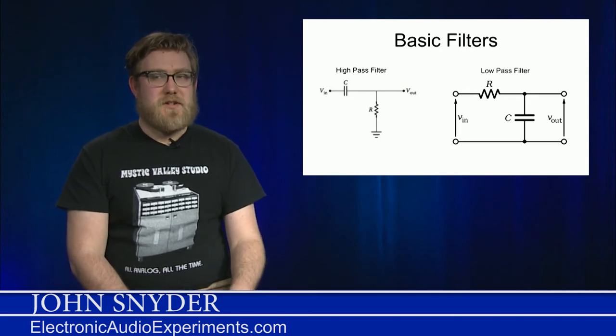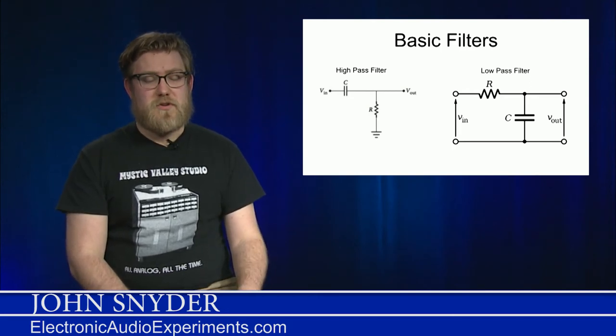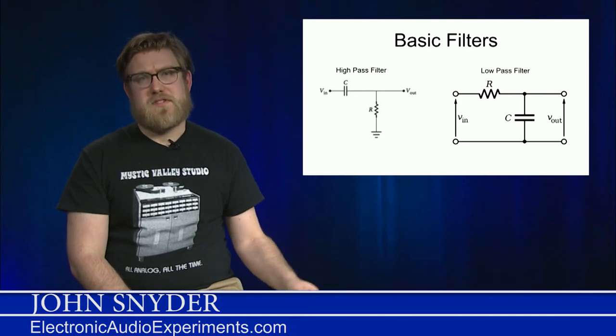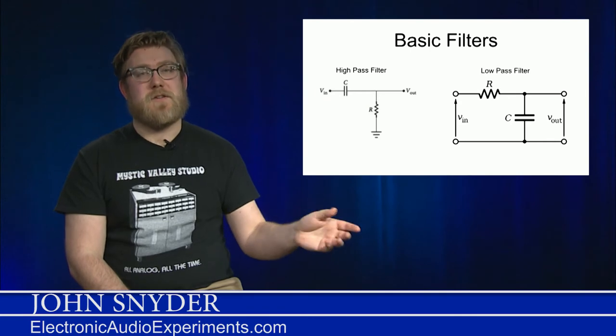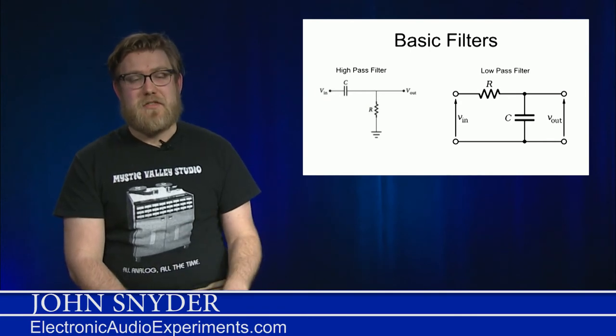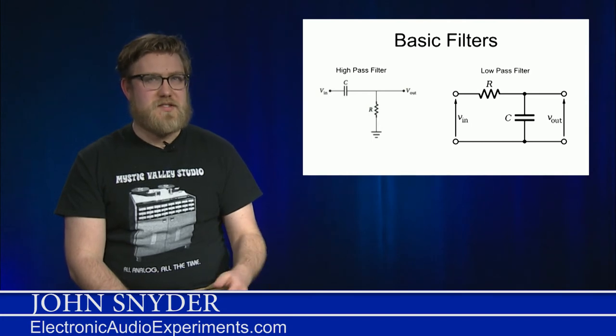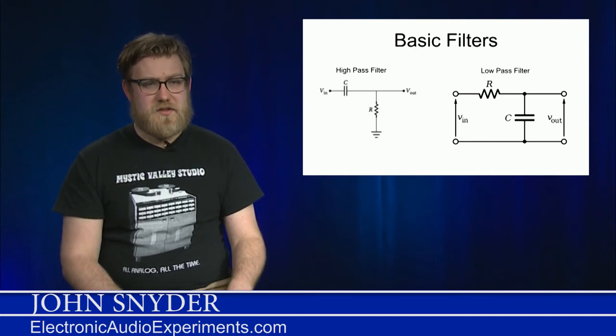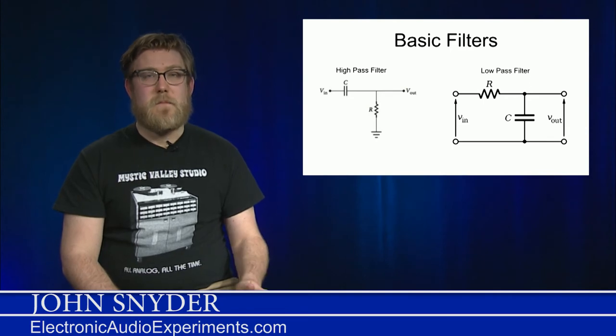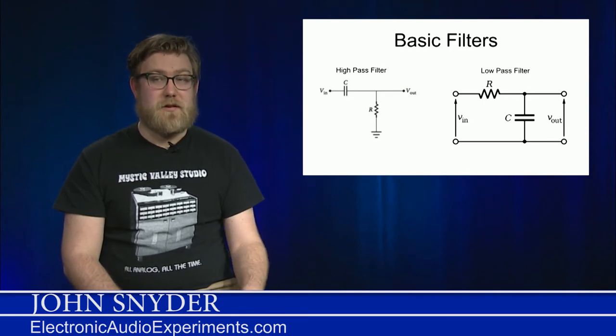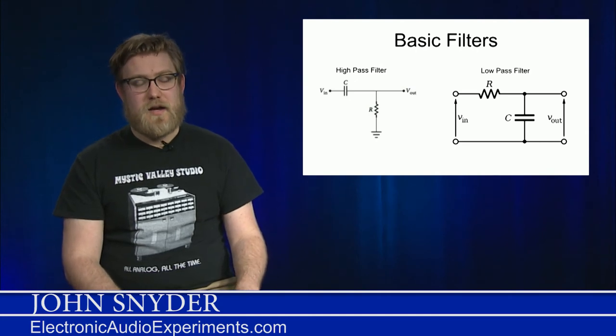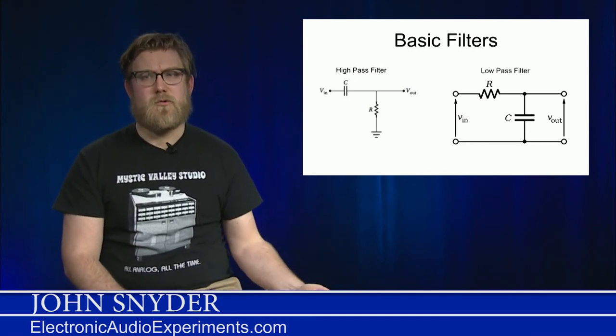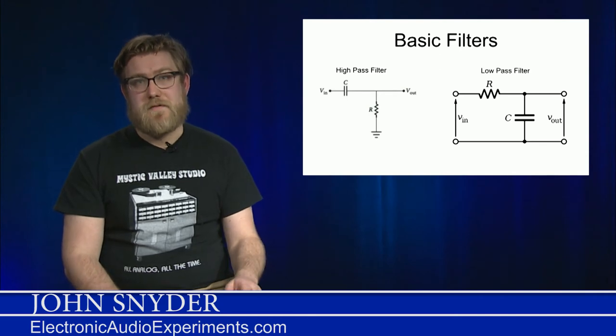You'll often see a high-pass filter at the input of a circuit in order to block out unwanted low frequencies like rumble and mud, whereas you'll see a low-pass filter at the end in order to cut out things like harshness, fizz, extra distortion products that you might not want to hear, and all those sorts of things. You also will see a low-pass filter used to block radio signals out of an input, and you can find this in a guitar amp, you can find this in a mic preamp, you can even find this in non-audio equipment to get rid of unwanted noise radiating from RF sources.